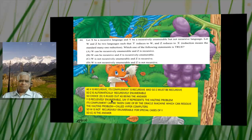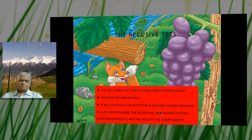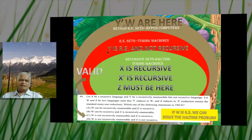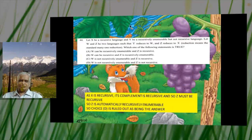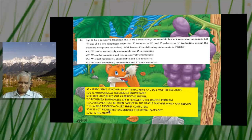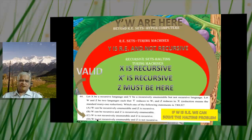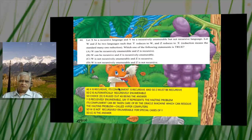Y is recursively enumerable — say it represents the halting problem. Its complement cannot be solved, so W, which Y complement reduces to, cannot be recursively enumerable. If Y is here in the diagram, Y complement is outside RE, and W has to be there too — W cannot be recursively enumerable. So C is the answer: W is not RE and Z is recursive.